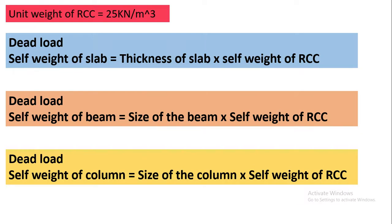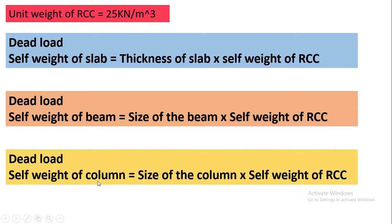Now, let's see how to calculate the self-weight of structural elements. The unit weight of RCC is 25 kN per cubic meter. Self-weight of slab equals thickness of slab multiplied by unit weight of RCC. For example, if thickness of slab is 150 mm — converting to meters — multiply 0.15 by 25. Self-weight of beam equals width times depth of beam multiplied by 25 kN/m³. Self-weight of column equals size of column multiplied by unit weight of RCC.